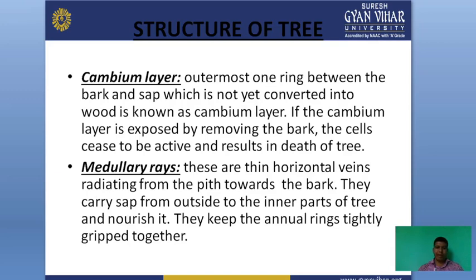Cambium layer: it is the outermost ring between the bark and sapwood. The cambium layer is the layer that lies between bark and sap and is not converted into wood. If the cambium layer is exposed by removing the bark, the cells cease to be active and result in the death of the tree.